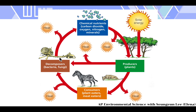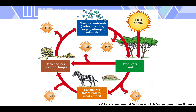Another diagram shows how the different components of the ecosystem interact. Solar energy goes to producers — plants — through photosynthesis. They make their own food, which then goes to consumers: plant eaters, then meat eaters, then decomposers. Heat is released, and chemical nutrients like carbon dioxide, oxygen, and nitrogen minerals return to the soil, which feeds the plants again, repeating the cycle.